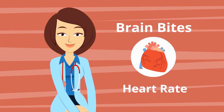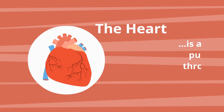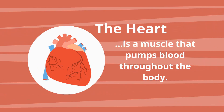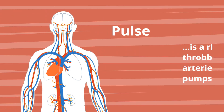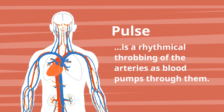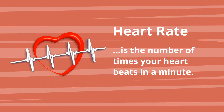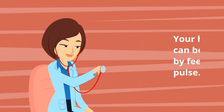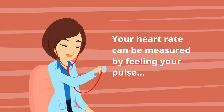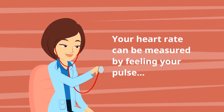Brain Bites: Heart Rate. The heart is a muscle that pumps blood throughout the body. Your pulse is a rhythmical throbbing of the arteries as blood pumps through them. Your heart rate is the number of times your heart beats in a minute. Your heart rate can be measured by feeling your pulse.